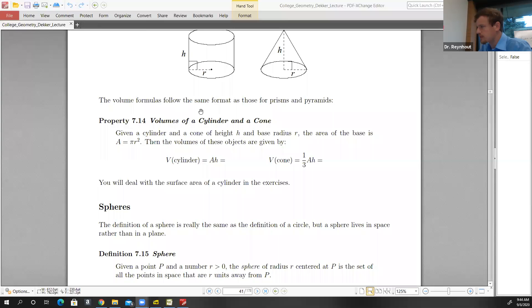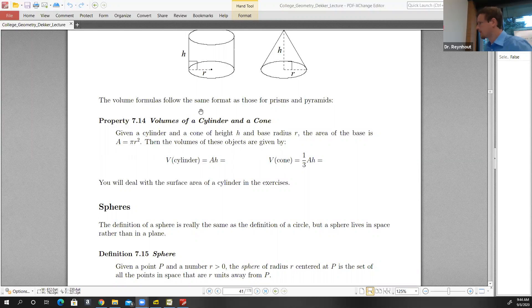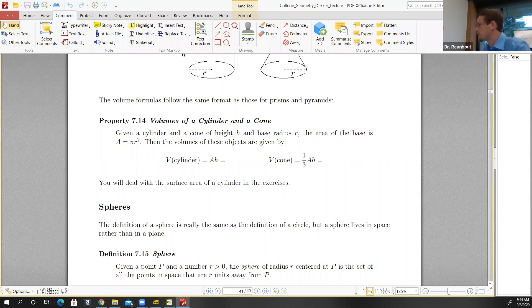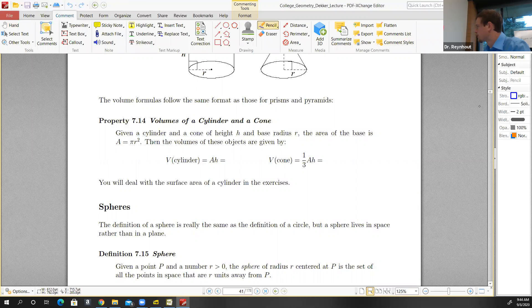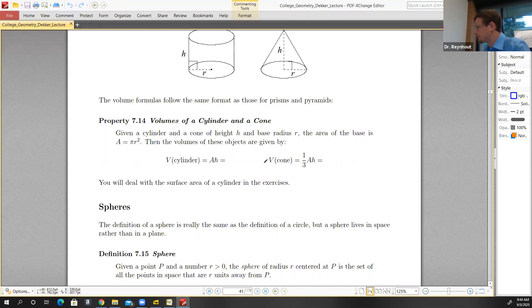The volume of a cylinder and a cone, these formulas you might already be familiar with, and they are actually very similar to the formulas that we used for prisms and pyramids. The volume of a prism was given by the area of the base times the height of the prism.